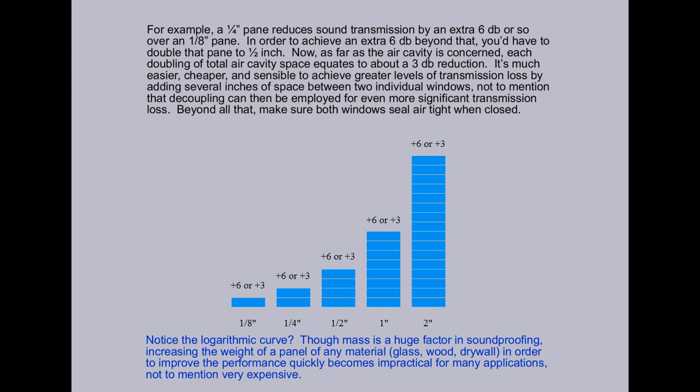Now, as far as the air cavity is concerned, each doubling of total air cavity space equates to about three decibels reduction. It's much easier, cheaper, and sensible to achieve greater levels of transmission loss by adding several inches of space between two individual windows. Not to mention that decoupling can be employed for even more significant transmission loss.